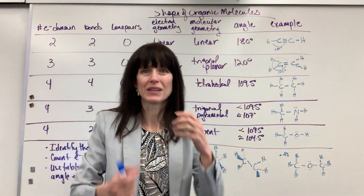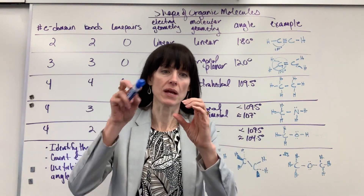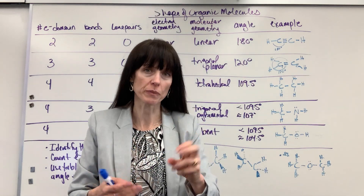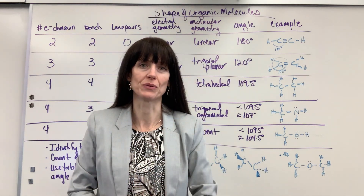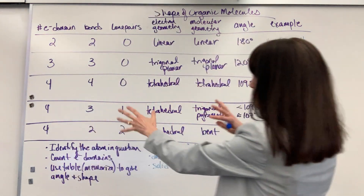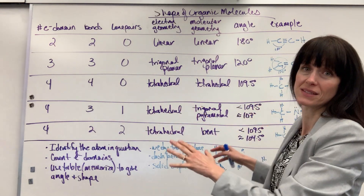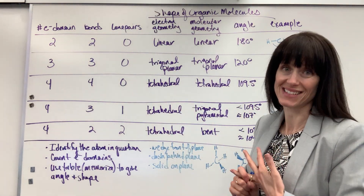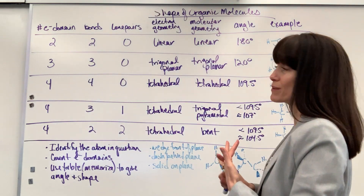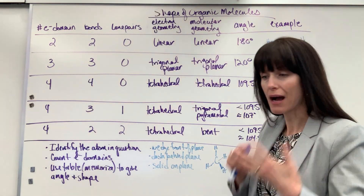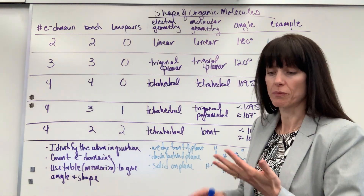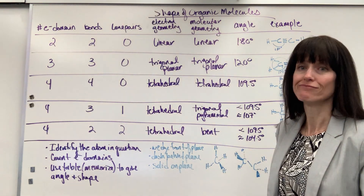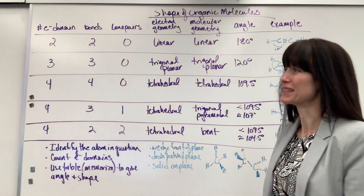Here's the cool thing: when you look at an atom and count the electron domains around it — number of bonds, number of lone pairs — wherever it fits on this table, that's going to be its angle and its name. Those won't change. You just count electron domains, look at number of bonds and lone pairs, and then see where it fits on the table. Then you have the angle and the name.